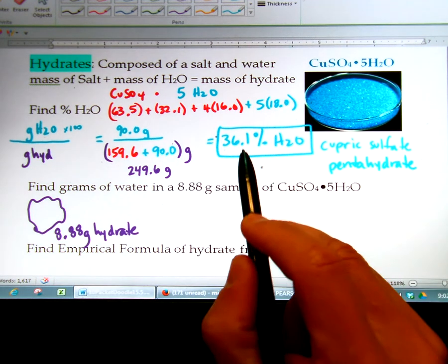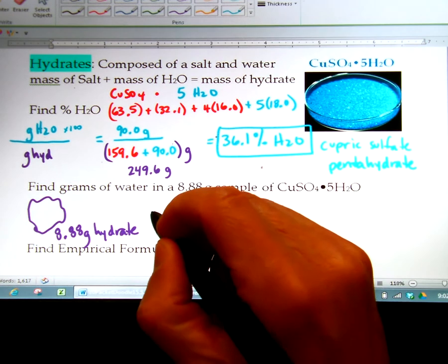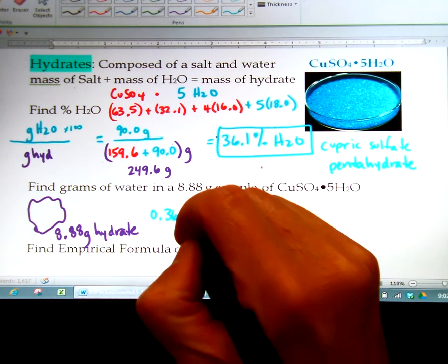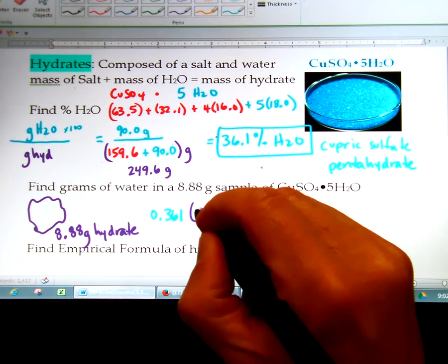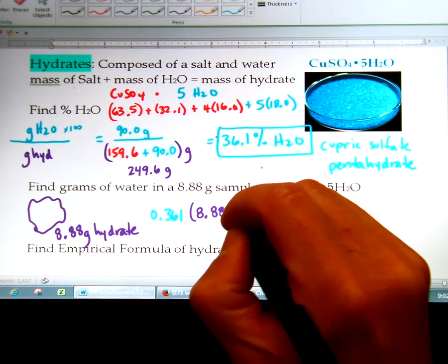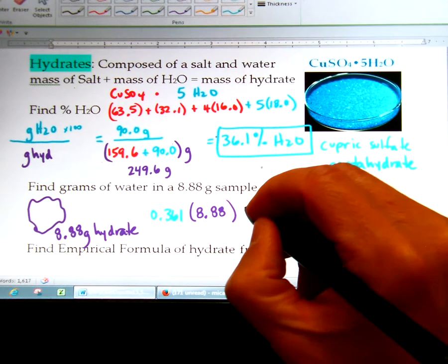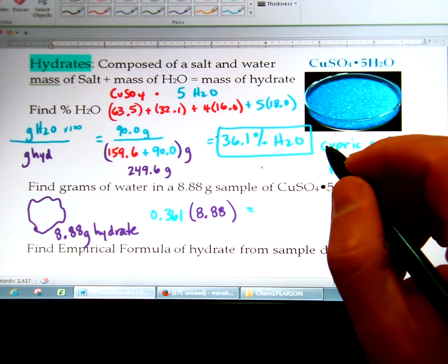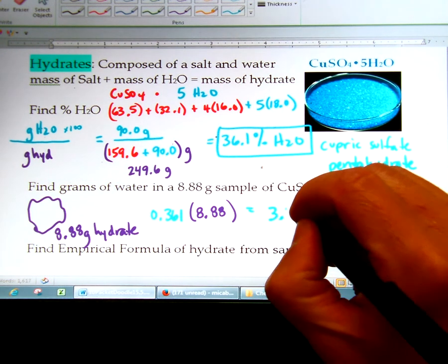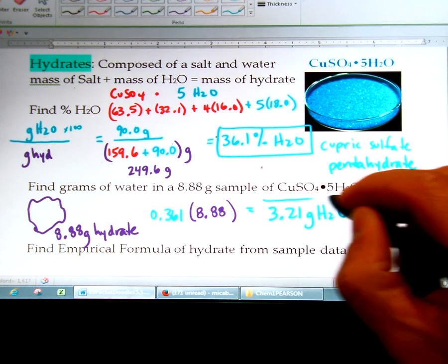Well, you already know that 36.1% is water. So all you need to do is take 0.361, which is 36.1% of the 8.88 grams of hydrate, and you're going to find out how much water is in it. 0.361 times 8.88 gives you 3.21. So there are 3.21 grams of water in 8.88 grams of hydrate.